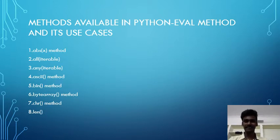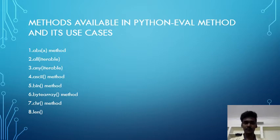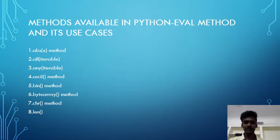The methods available in Python and their use cases are as follows. The first one is abs(x) method. The second one is all(iterable) method. The third one is any(iterable) method. The fourth one is ascii() method. The fifth one is bin() method. The sixth one is bytearray() method. The seventh one is chr() method. The eighth one is len() method.